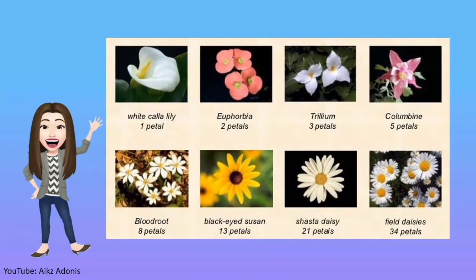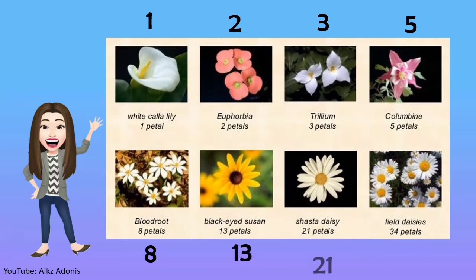You might think that any number is possible. But you might be surprised, because nature seems to favor a particular set of numbers like 1, 2, 3, 5, 8, 13, 21, and 34. It may seem a coincidence to you,